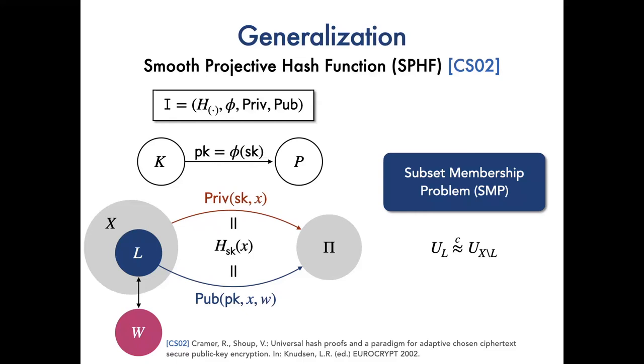Smooth projective hash function, SPHF, was originally proposed by Cramer and Shoup for generally constructing practical CCA-secure PKE. Roughly, SPHF is a family of hash functions H indexed by K that maps the element set X onto the hash value set Pi. An SPHF is associated with an NP language L, where elements in L are computationally indistinguishable from those in non-language set X minus L. This is the hard subset membership problem.